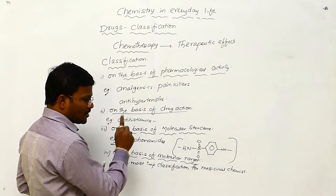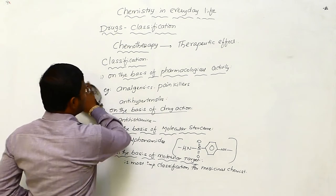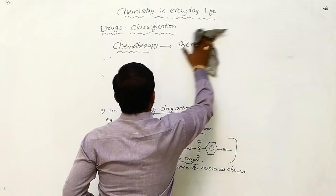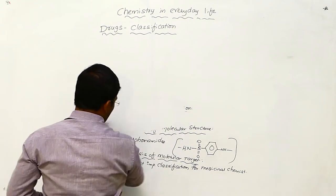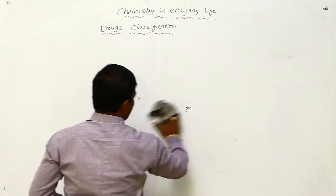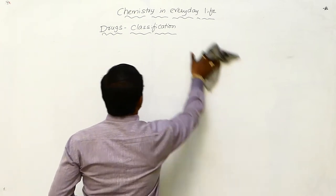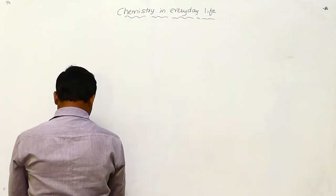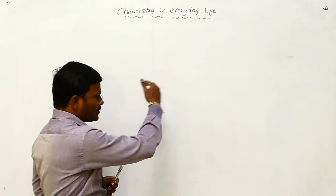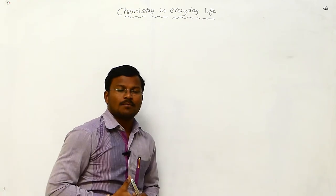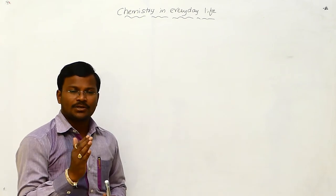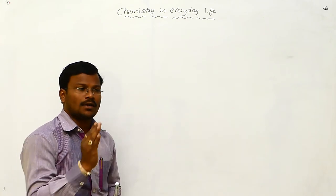This is the classification of drugs. After the classification of drugs, let us learn about drugs and their molecular targets. Out of the four types of classifications, the most importance goes to classification on the basis of molecular target.